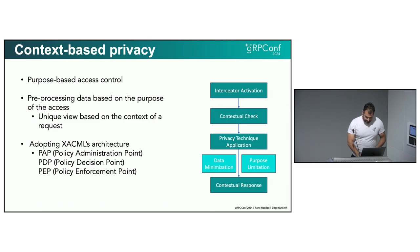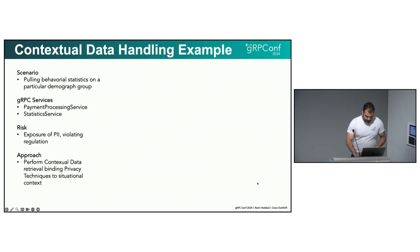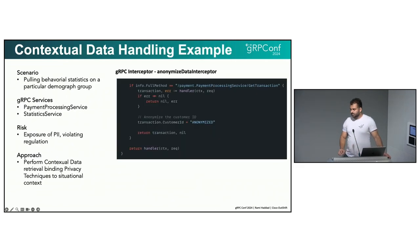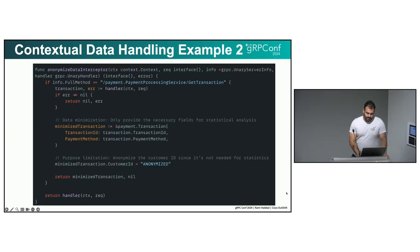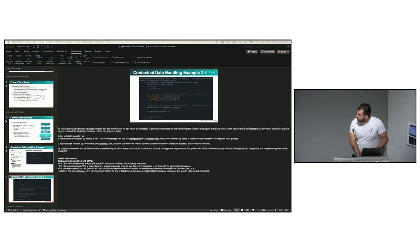Let's take a look at the code. The idea is really that the interceptor becomes the privacy control point. This is an extremely simple example where the transaction customer ID is anonymized — this is data minimization. This does not yet perform any purpose limitation. Let's head to a piece of code here.